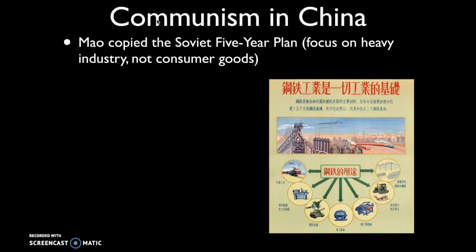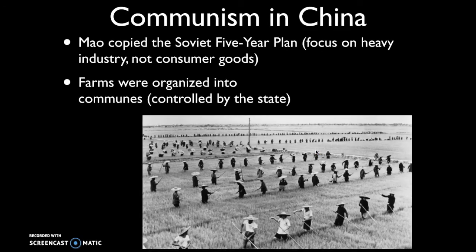Mao copies the Soviet five-year plan, which focuses on heavy industry but less on consumer goods. In China they start building up railroads, tanks, tractors, telephone wires, and state-run factories — a major similarity between how communism was implemented in the Soviet Union and China. In both countries there was also an attempt to collectivize farms: taking privately owned smaller farms and turning them into state-run communes, large enterprises run by the state.